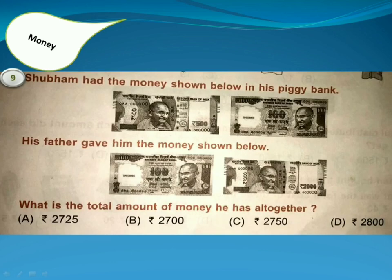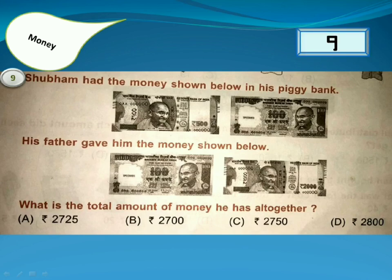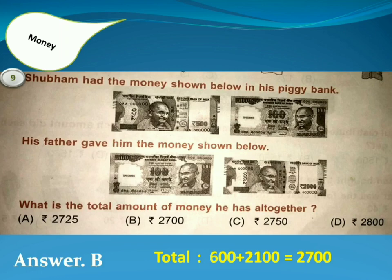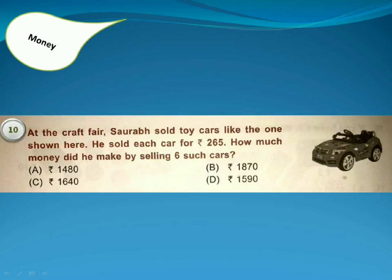Shubham had the money shown below in his piggy bank. His father gave him the money shown below. What is the total amount of money he has altogether? Answer is Option B, because he had 600 rupees.